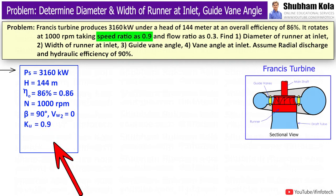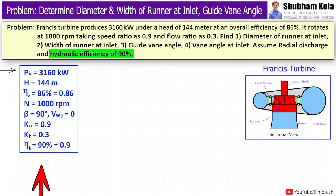Here speed ratio, represented as Ku, is given as 0.9, and flow ratio, represented as Kf, is given as 0.3, and hydraulic efficiency is given as 90%, i.e. ηh = 0.9.